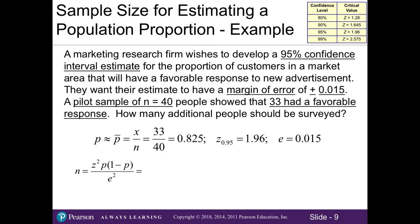So let's look at an example. A marketing research firm wishes to develop a 95% confidence interval estimate for the proportion of customers in a market area that will have a favorable response to new advertisement. They want their estimate to have a margin of error of plus or minus 0.015. In other words, they want a margin of error of 1.5%. A pilot sample of n equals 40 people showed that 33 had a favorable response. How many additional people should be surveyed?